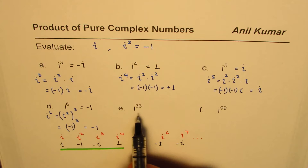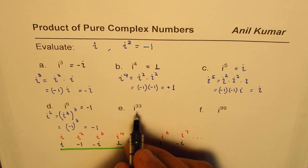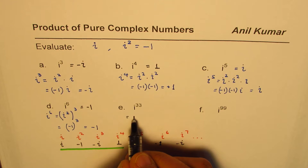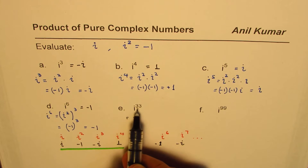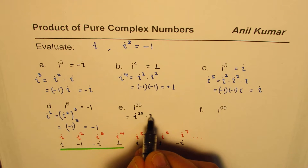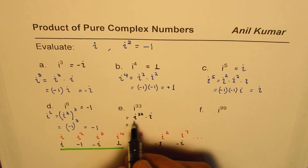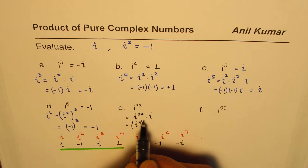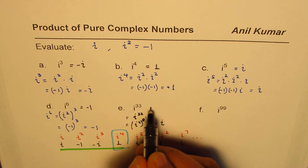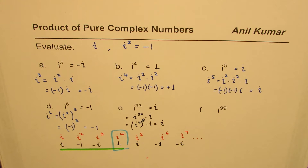We'll use this pattern to find i to the power of 33. Since i to the power of 4 equals 1, we look for the largest multiple of 4 less than or equal to 33, which is 32. So we write i to the power of 33 as i to the power of 32 times i. Now i to the power of 32 is (i⁴)⁸, and since i⁴ equals 1, that whole term equals 1. So 1 times i gives us i. Therefore i to the power of 33 equals i.